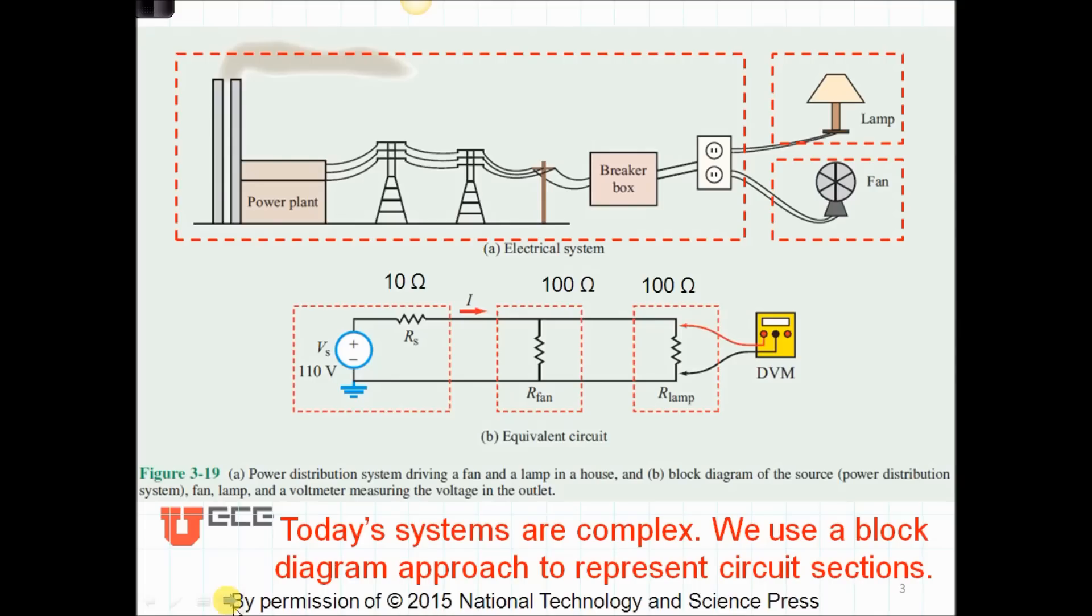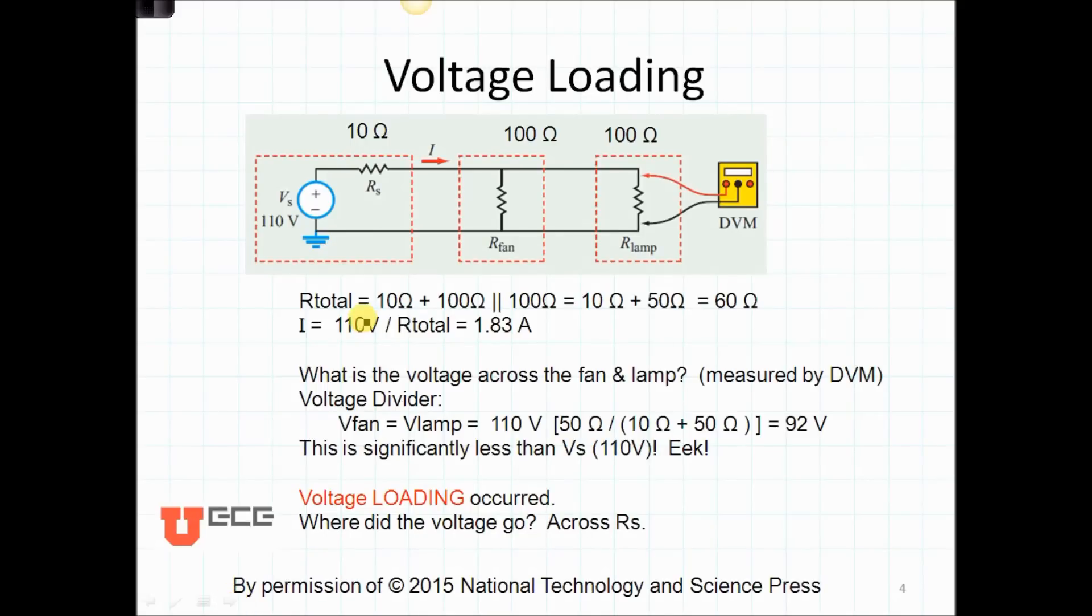We actually do this all the time. If we want to design a simple lamp or a fan, we don't actually consider the entire power distribution shown in this box. We convert it instead to a Thevenin equivalent circuit. Here is the 110 volt source in your house and an equivalent source resistance. Let's say that's 10 ohms. What we're saying is that the voltage and the current seen at these two points are the same as the voltage and current that are seen at these two points. So we've done an equivalent circuit. We can then analyze this circuit as a set of blocks as shown here. Let's consider the total resistance and find the current and let's see what voltage we're measuring across our fan and our lamp. We can see that these two are in parallel. So 100 in parallel with 100 is 50 plus the 10 in series means that our total resistance is 60 ohms.